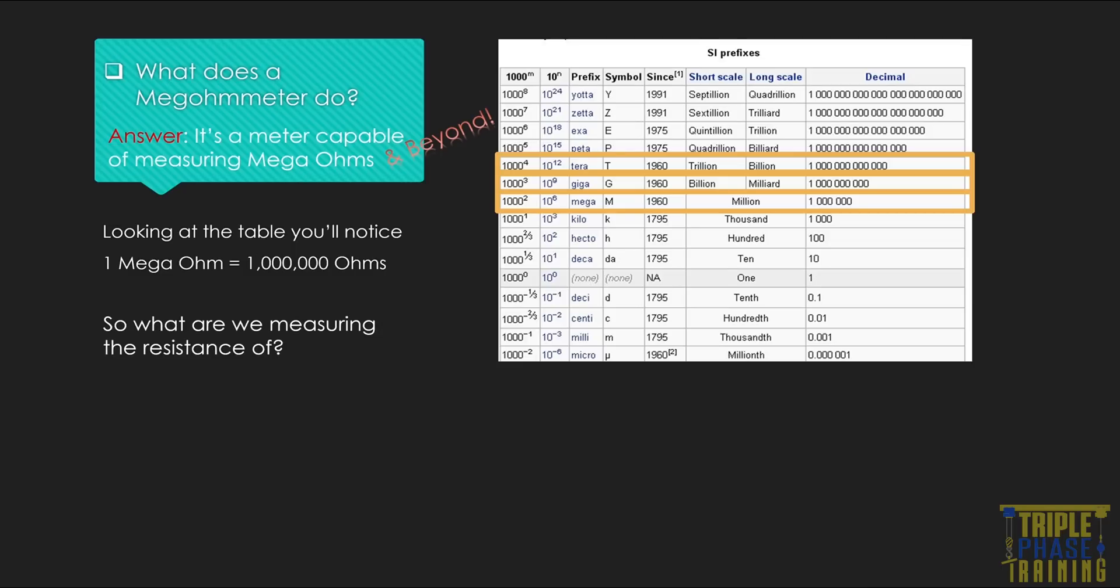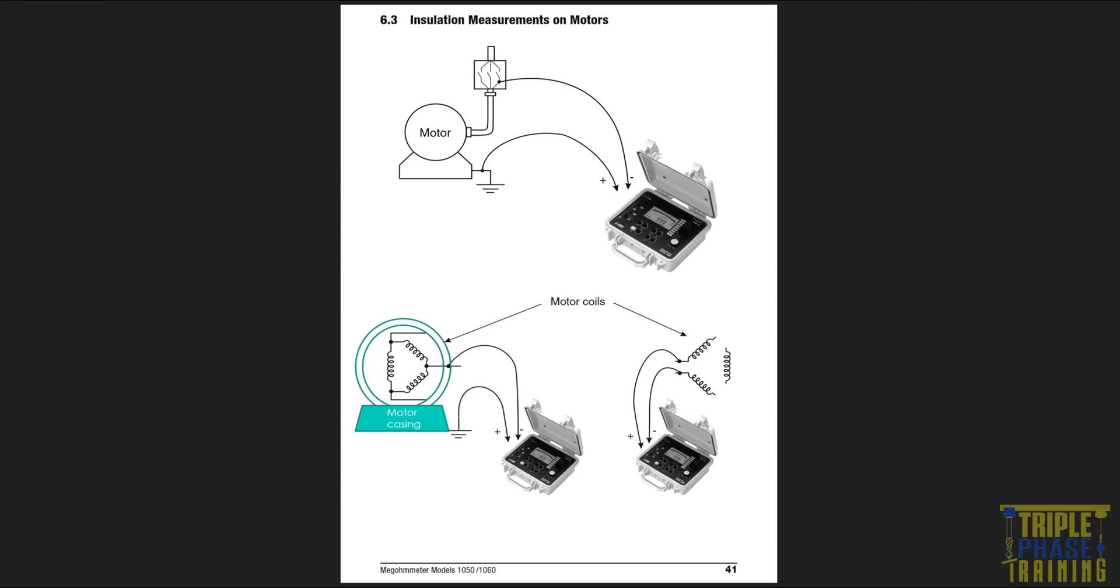So what are we measuring the resistance of? We are actually performing an insulation test. We are testing the motor's insulation, more specifically between the motor windings and the motor casing. If a fraction of current flows, it can be measured by the meter.